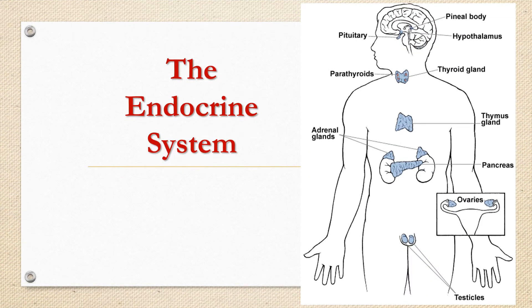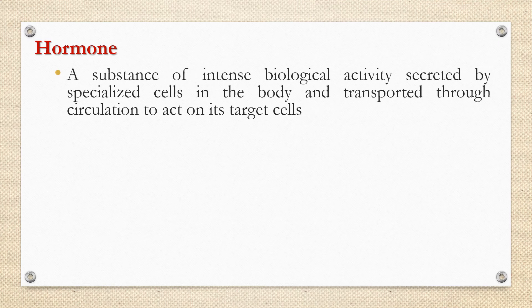Coming to the endocrine system, there are various glands which secrete hormones: pituitary gland, pineal gland, hypothalamus (which is not a gland but secretes important hormones), thyroid gland, parathyroid gland, adrenal, thymus gland, pancreas, and testicles in males and ovaries in females. By definition, a hormone is a substance of intense biological activity secreted by specialized cells in the body and transported through circulation to act on its target cells.